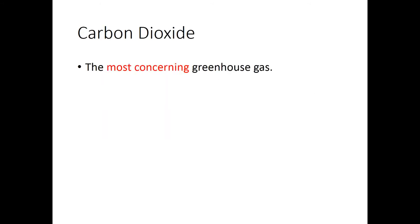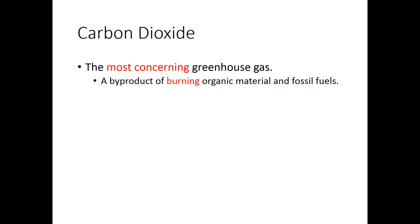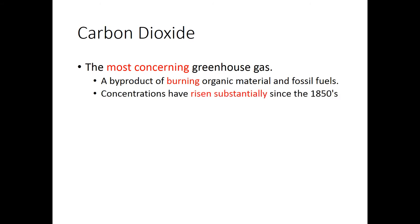Carbon dioxide is the most concerning greenhouse gas — it has experienced the biggest increase and played the biggest role in warmer temperatures. Carbon dioxide is a byproduct of burning anything that's organic. If you've ever taken an organic chemistry class, CO2 is a byproduct of oxidation — organic material is heavy in carbon, and burning that carbon causes it to react with oxygen to produce carbon dioxide. And we have burned a lot of organic material. The oil that goes into the gas that goes into your car is organic, and by burning it, we have greatly increased our carbon dioxide concentrations.